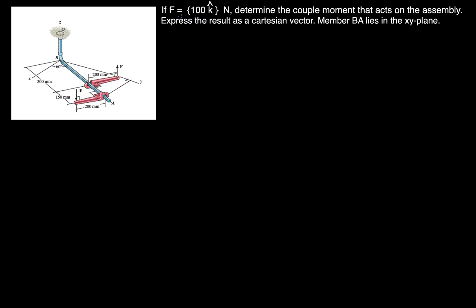Okay, so if F equals 100 newtons in the k direction, determine the couple moment that acts on the assembly. Express the result as a Cartesian vector. Remember, bA lies in the xy plane.